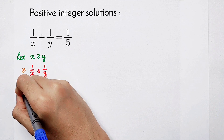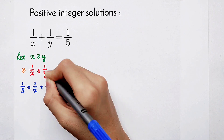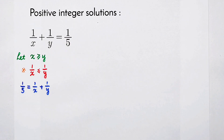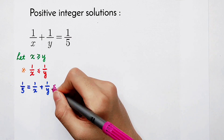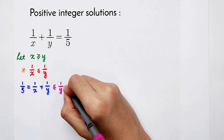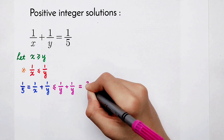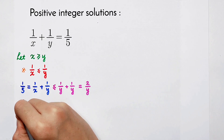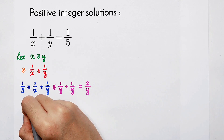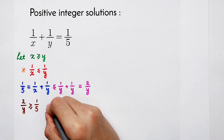Rewriting this equation: 1 over 5 is equal to 1 over x plus 1 over y. Because 1 over x is smaller or equal to 1 over y, we get 1 fifth is smaller or equal to 2 over y. Now we can solve this inequality: 2 over y is greater or equal to 1 over 5. Multiplying both sides by 10, we get y is smaller or equal to 10. So the maximum value of y is 10.